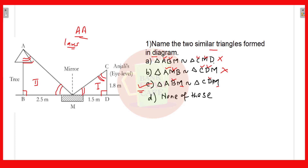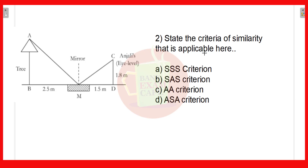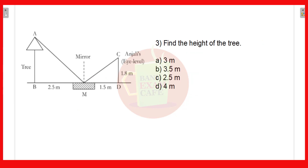The next question asks us to state the criteria of similarity applicable here. We have seen that angle B and angle D are 90°, and the angle of incidence equals the angle of reflection. Therefore by AA criteria these two triangles are similar, and option C is the correct answer.